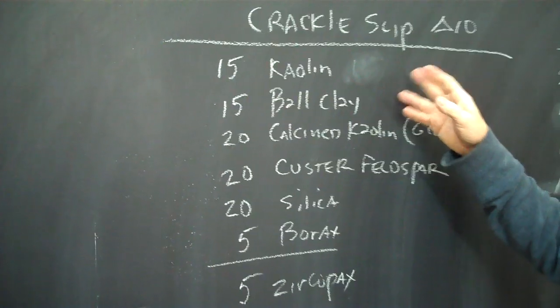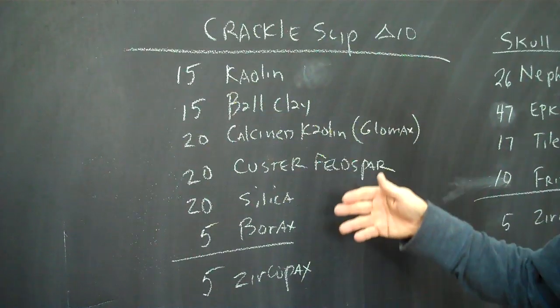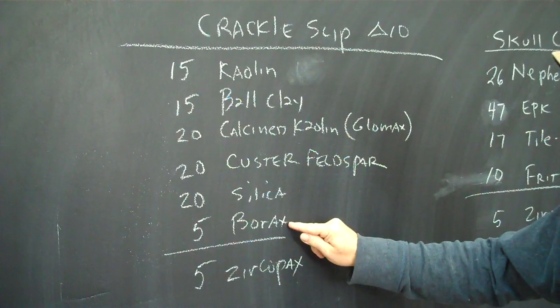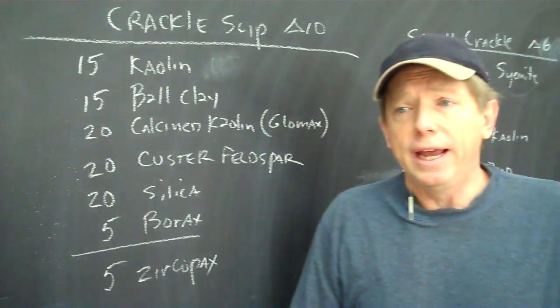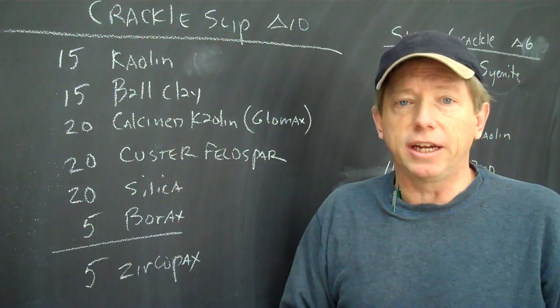Here's a classic cone 10 recipe a lot of people use. And if you look at this, the only thing that's soluble is this borax. That's a sodium borate, and so over time that will deflocculate the slip.